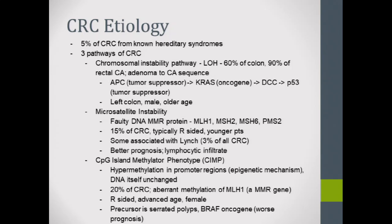Colorectal cancer: only 5% arise from known hereditary syndromes. Beyond that 5%, there are three known pathways. The classic chromosomal instability pathway is the two-hit theory — progression from benign to adenoma to tubular villous adenoma to cancer, with sequential hits: APC, then KRAS, then DCC, then P53. This is what colonoscopies aim to interrupt.